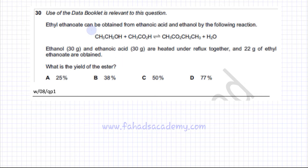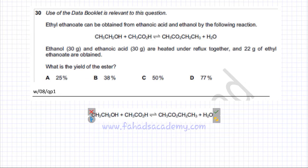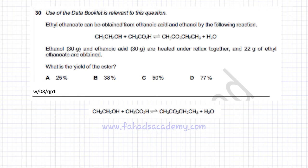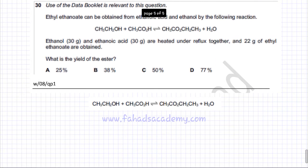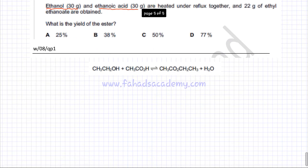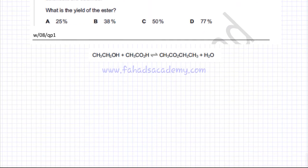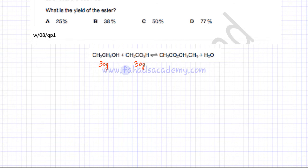Let's copy and paste this equation. We're given 30 grams of both reactants — 30 grams of ethanol and 30 grams of ethanoic acid. The first thing we need to do is find the moles of 30 grams of ethanol and 30 grams of ethanoic acid. Moles is mass divided by the molar mass.